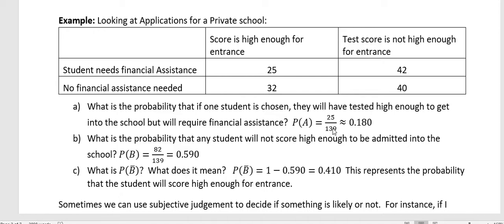We want to know the probability that they tested high enough to get into school but will require financial assistance. They tested high enough but need financial aid - that's 25 students in that block. So that's 25 out of 139, which is about 18% or 0.180 of the students that fall into that category.